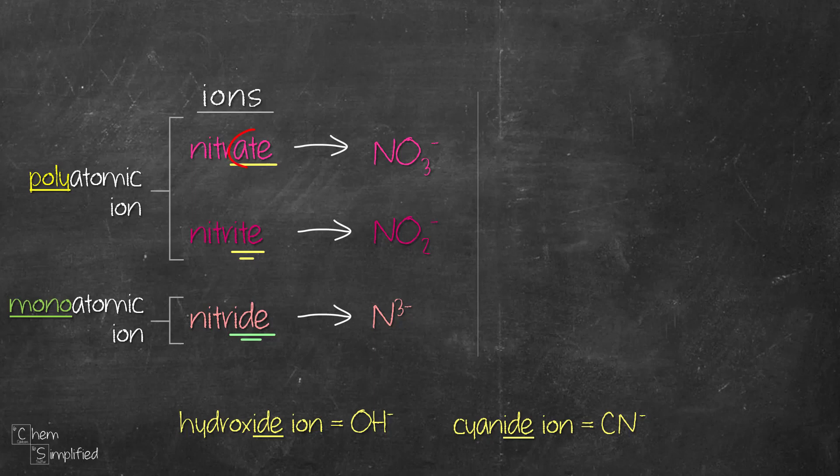Just keep in mind, when you see A-T-E and I-T-E, you should just automatically think polyatomic ion. Whereas when you see I-D-E, that's monoatomic ion. If you keep this in mind, you'll make less mistakes.